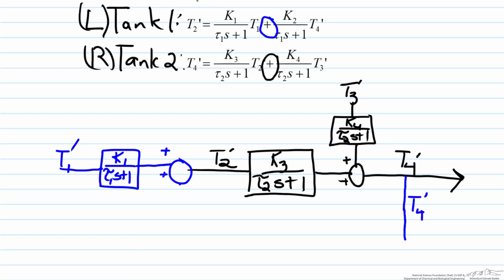So we have the branch point and then we form a block here which would represent the relationship between T2 and T4 and we have it reach the summing point. So therefore looking at this summing point we have that T1 prime multiplied by k1 over tau1s plus 1 plus k2 over tau1s plus 1 multiplied by T4 prime gets you to T2 prime. And that is consistent with our diagram here.